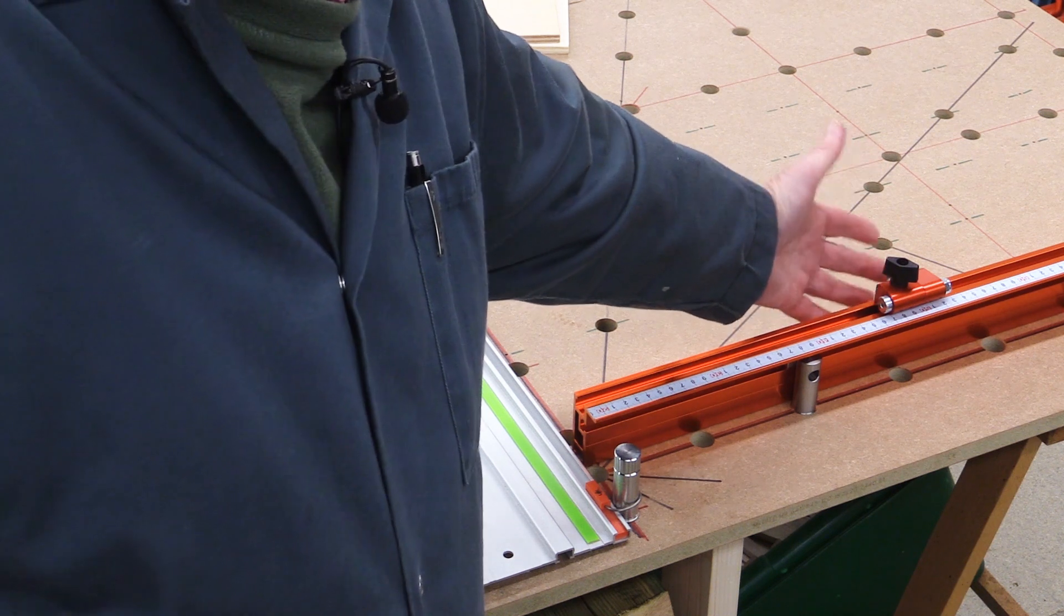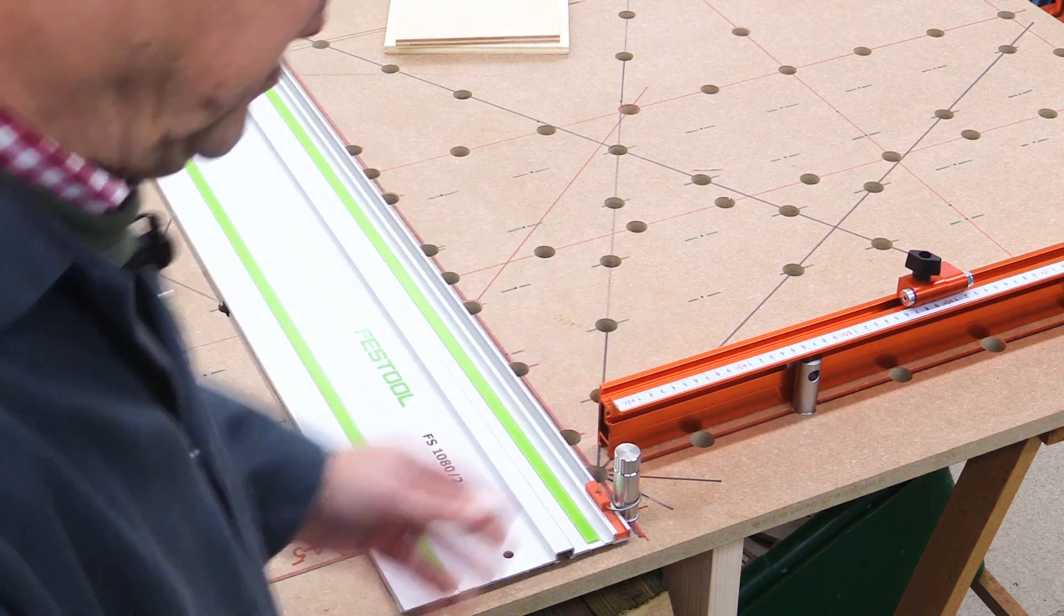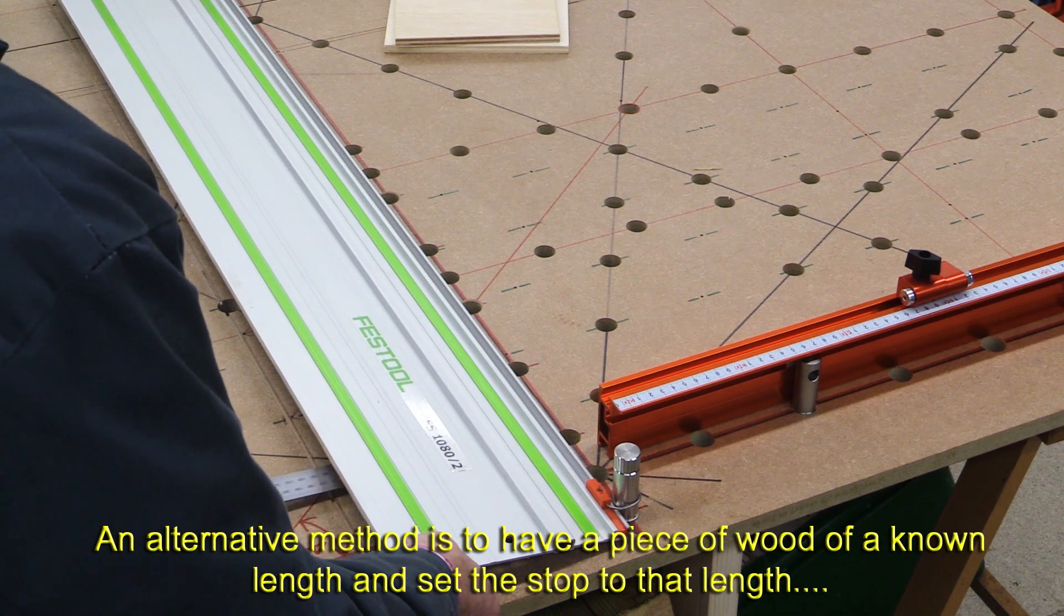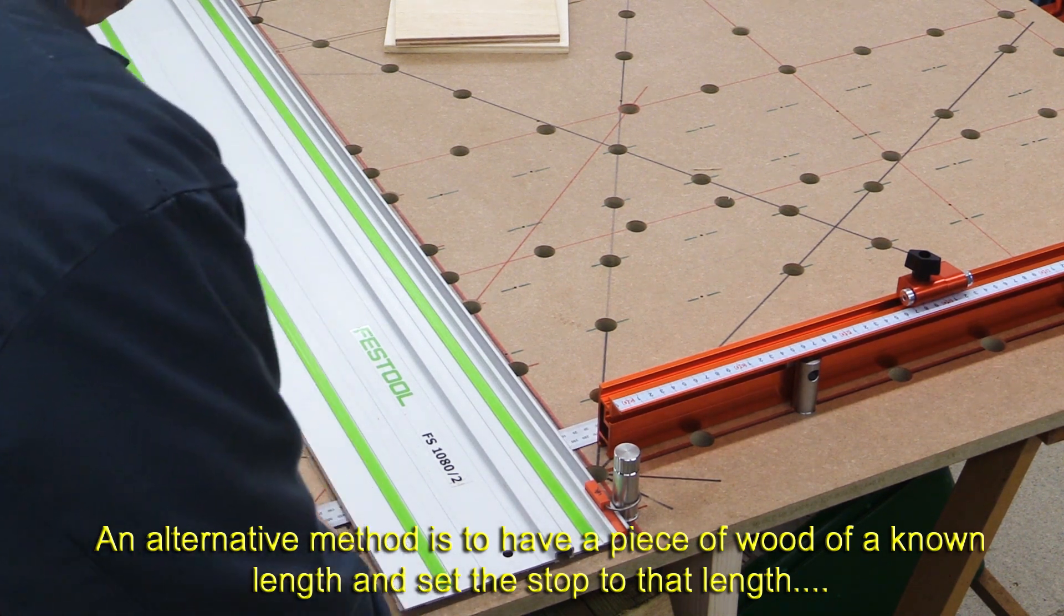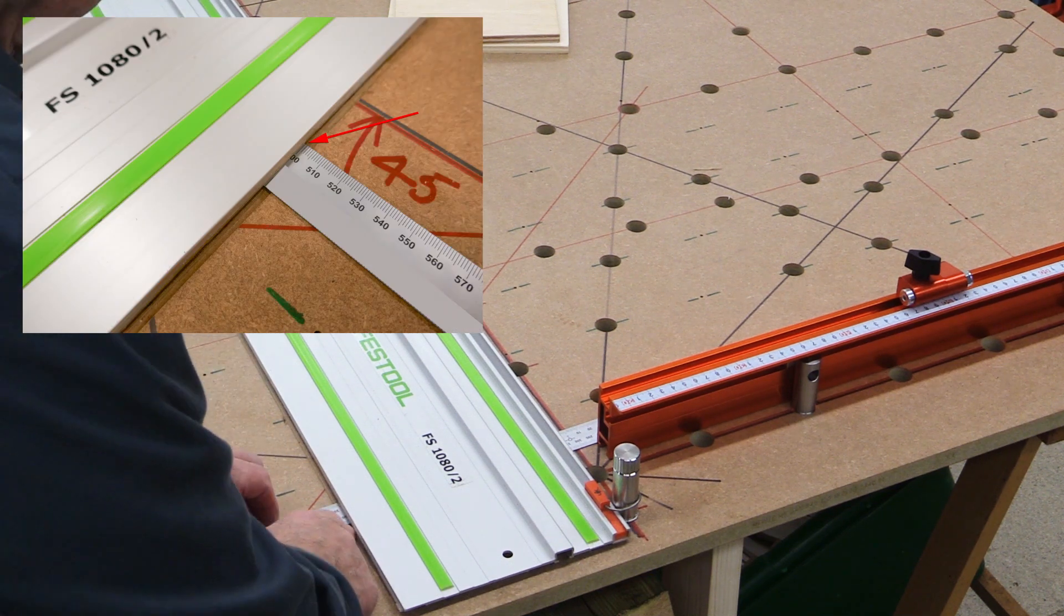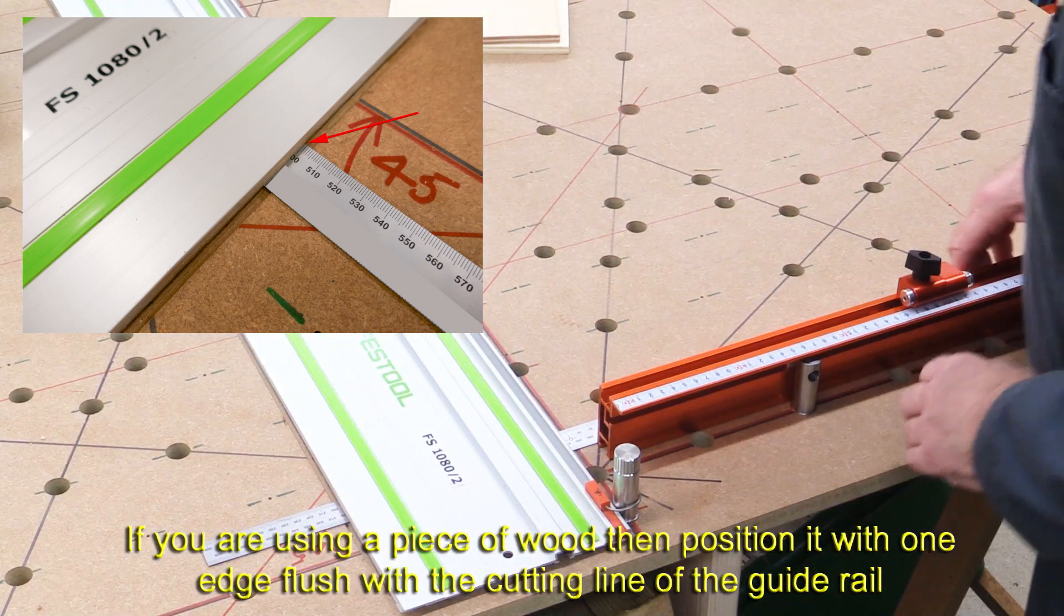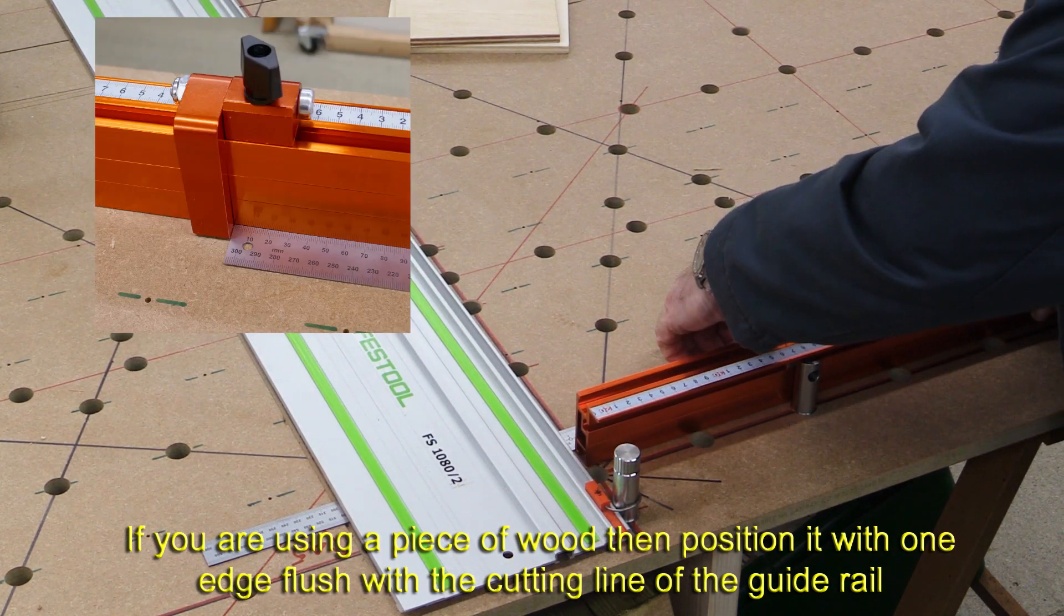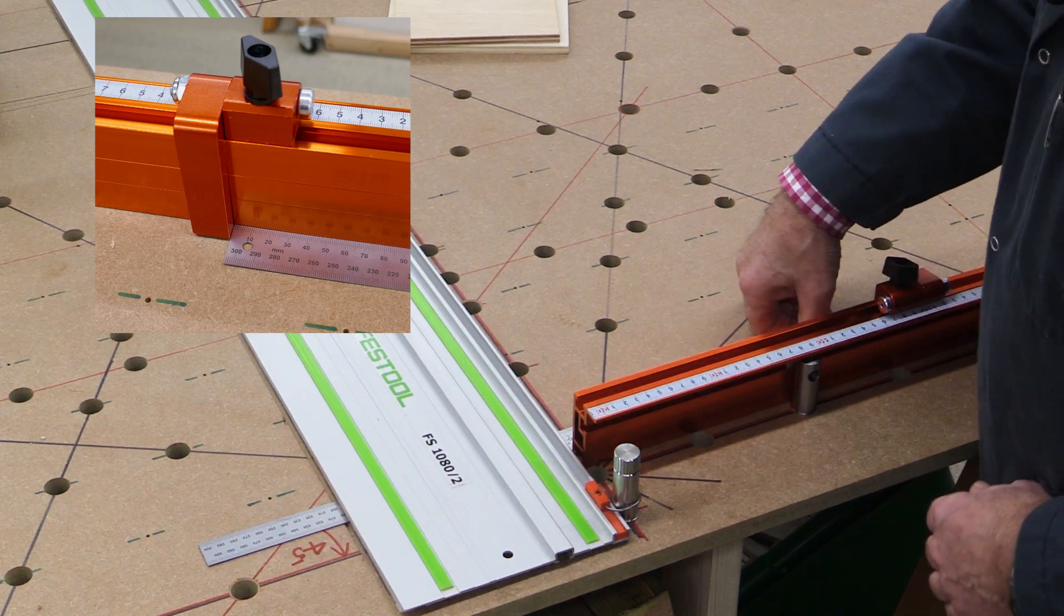So with my stop set at the 500 millimeter mark, and bearing in mind this can still move here, I'm now going to take my steel rule and I'm going to slide it underneath my guide rail. The guide rail is held against the tall dogs here, and I'm going to set this so that this end of the steel rule is on the cutting line of the guide rail and it's on the 500 millimeter mark. And now I'm going to go here and push this until it just meets that stop, just meets the end of the steel rule.